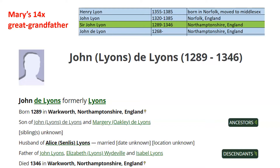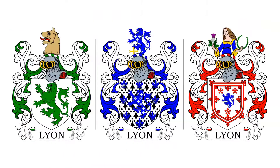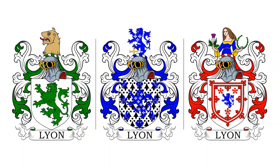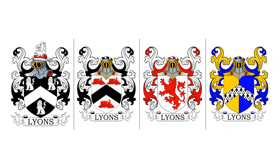Now we have him identified and next we're going to look for his coat of arms. The issue is that many surnames have multiple coats of arms, because coats of arms were granted to individuals and not entire families. So the question becomes: how do we know which of these coats of arms belonged to our John Lyon?